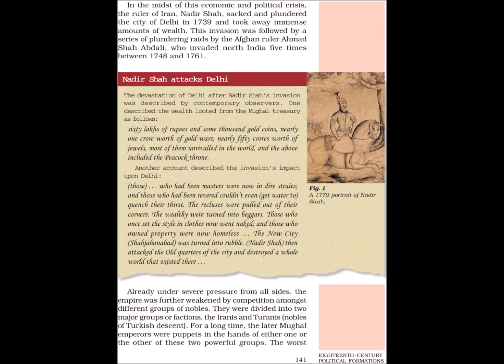Another account described the invasion's impact upon Delhi: 'Those who had been masters were now in dire straits and those who had been revered couldn't even get water to quench their thirst. The recluses were pulled out of their corners, the wealthy were turned into beggars, those who once set the stride in clothes now went naked and those who owned property were now homeless.' The new city, Shah Jahanabad, was turned into rubble. Nadir Shah then attacked the old quarters of the city and destroyed a whole world that existed there.